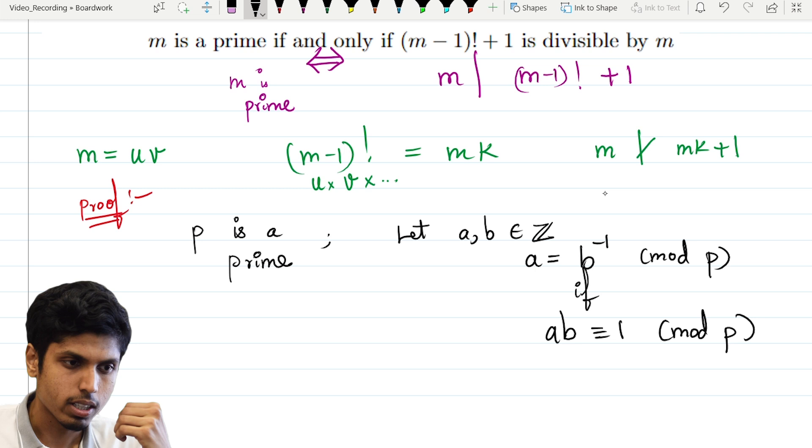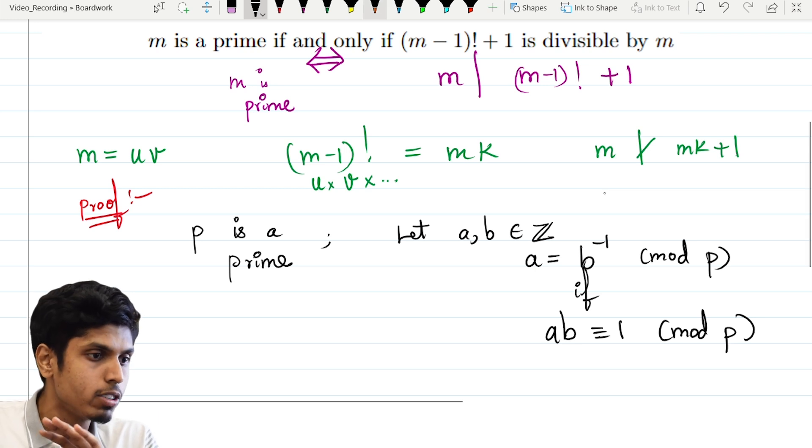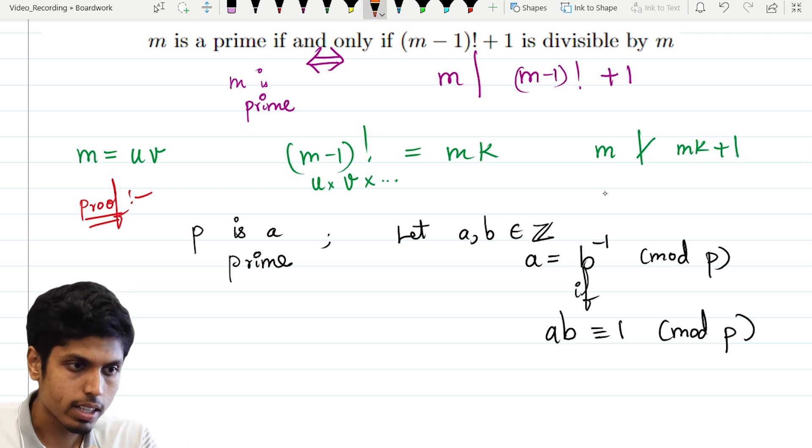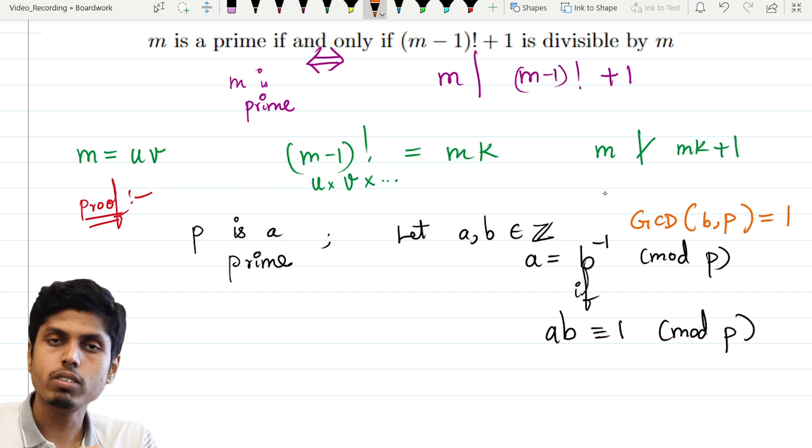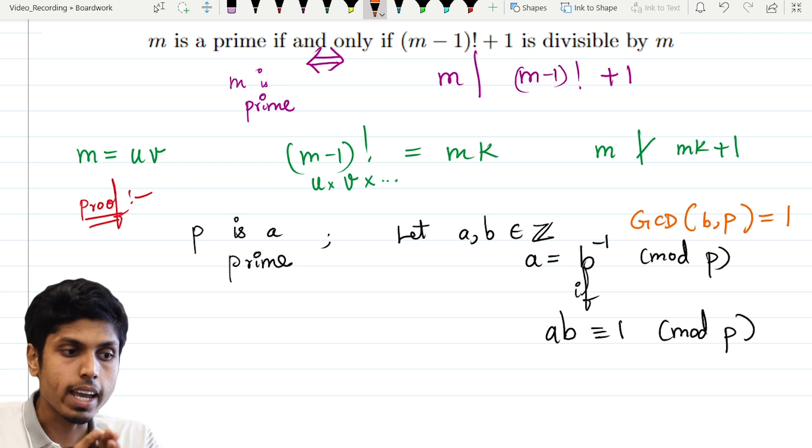And for this, we should have a prior condition that gcd of b, p equals 1. So inverse exists for only co-prime numbers to that prime. And we can say that a is the inverse. So how will I know that there exists an inverse?